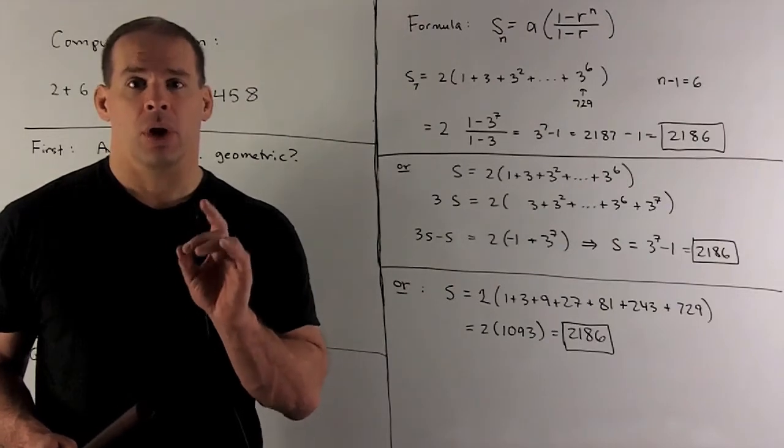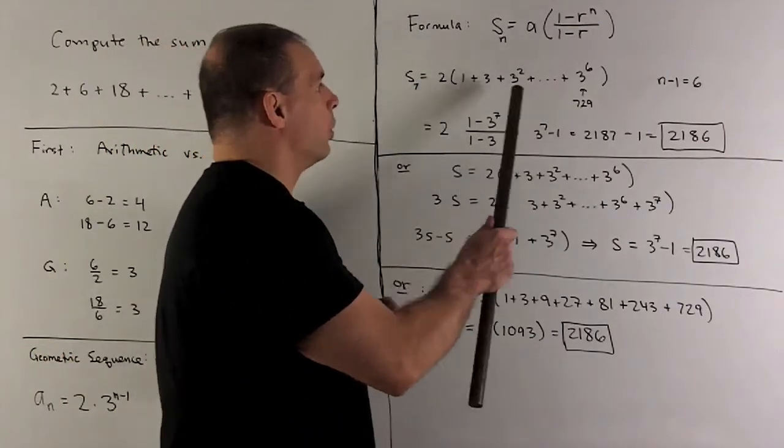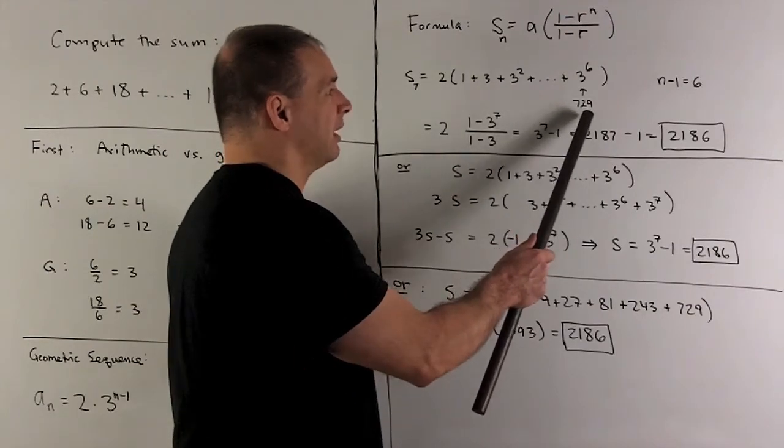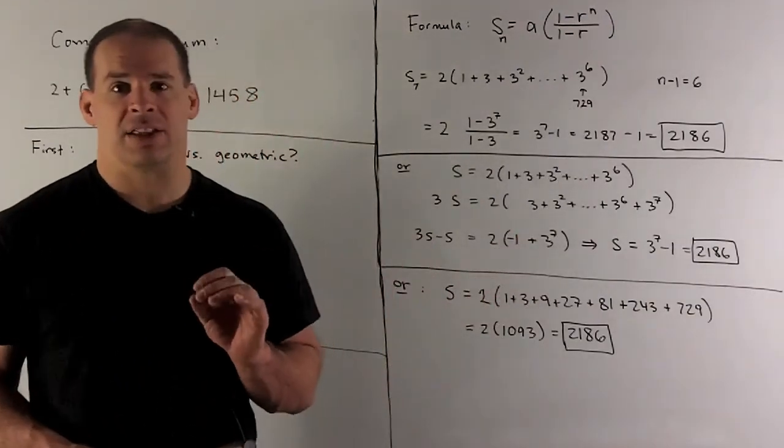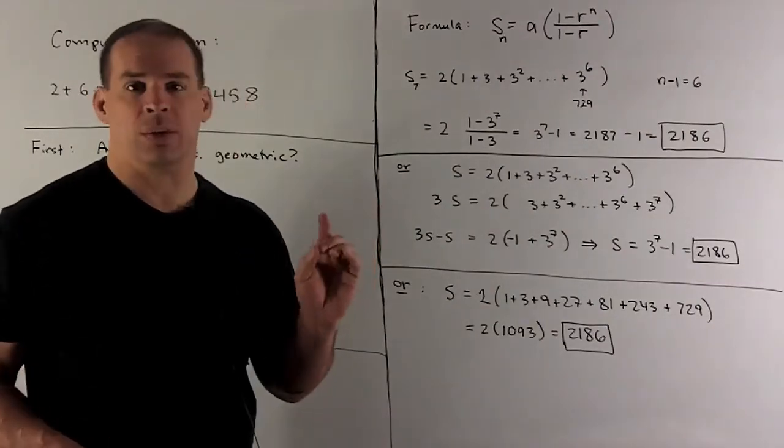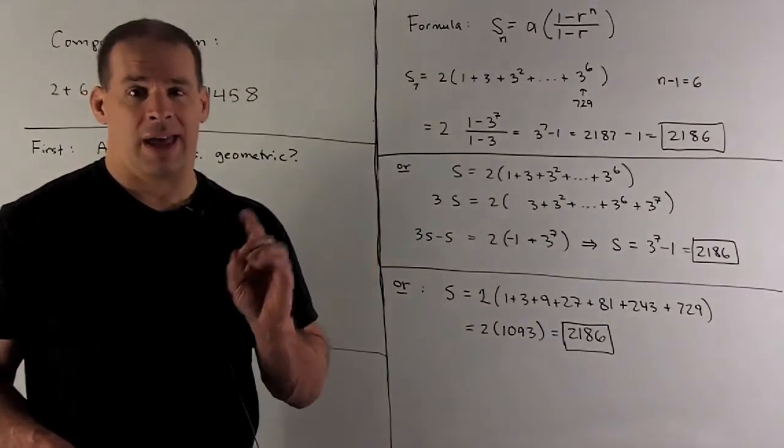In our case, we'll note, if I work out what 1458 is, it's going to be 2 times 729. 729 is 3 to the 6th power. So we'll have n minus 1 equals 6 or n equals 7.